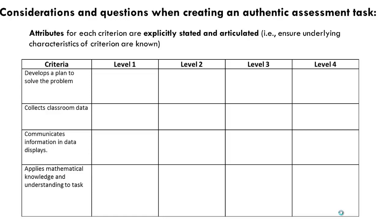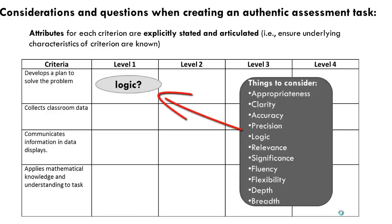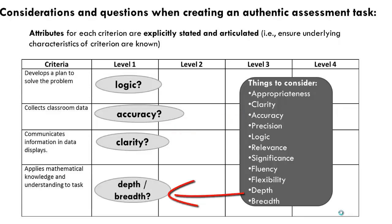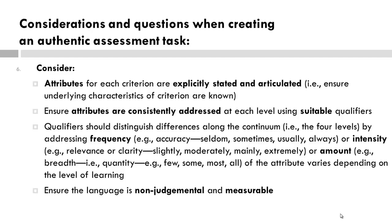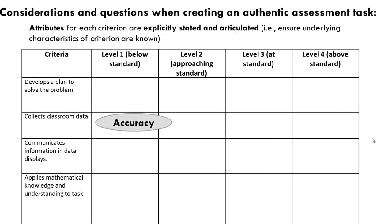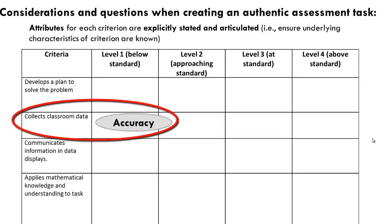When developing a plan, are you looking at the logic of the plan? Are you looking at the accuracy of the classroom data? Are you looking at the clarity of the communication? What about application of mathematical knowledge? Are you looking for depth or breadth of knowledge? Again, do these qualifiers stifle or limit student thinking? Creating a rubric is a challenge. Consider qualifiers to describe each criterion to create a continuum of learning for each particular criterion. Pause to reflect. Here are some examples of qualifiers — this is not a prescriptive list, but rather it is to stimulate your thinking of additional qualifiers. Let's go back to this example and consider the second criterion and the notion of accuracy as a qualifier to develop the criterion along the continuum.